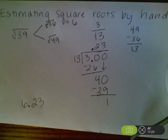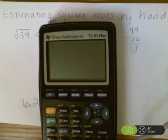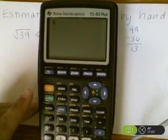Now, if you were to actually check this with the calculator and find the square root of 39, it may not be exactly 6.23. If you look at my calculator here, my TI-83,